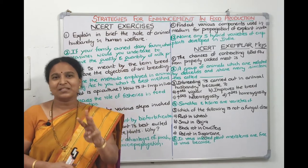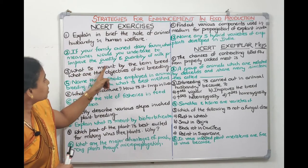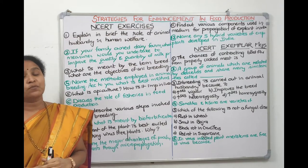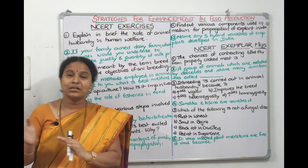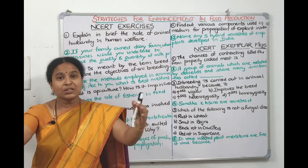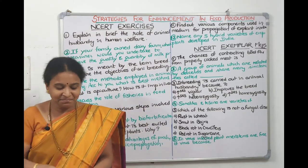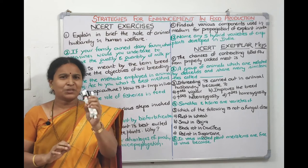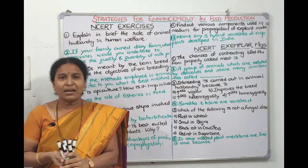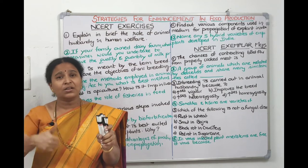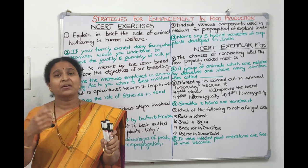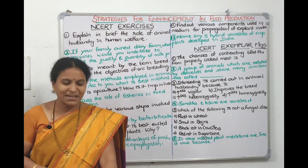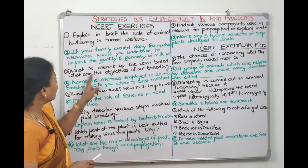The third question: what is meant by the term 'breed'? A group of animals which came from a common ancestor — since they are descendants of the common ancestor, they share many similarities: the same configuration, same size, same behavior, and same habitat. This group descended from a common ancestor is called a breed.